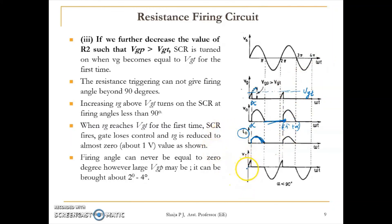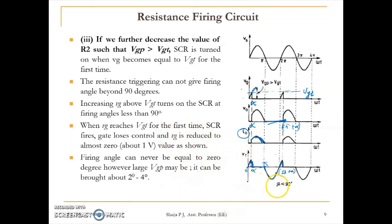The SCR voltage equals the supply voltage when the SCR is off — from 0 to alpha. After conduction ends at π, the entire negative portion appears across the SCR until 2π + alpha. With this resistance firing method, the turning-on angle alpha can range from as low as 2 to 4 degrees up to 90 degrees.